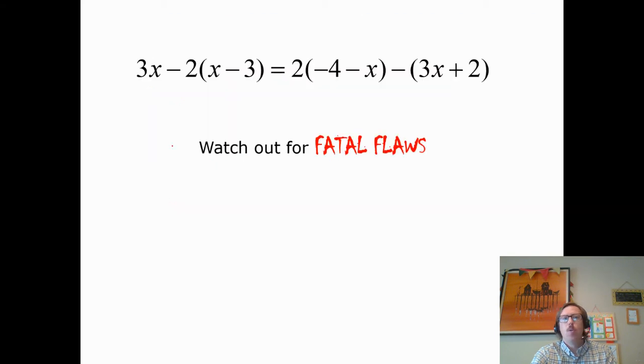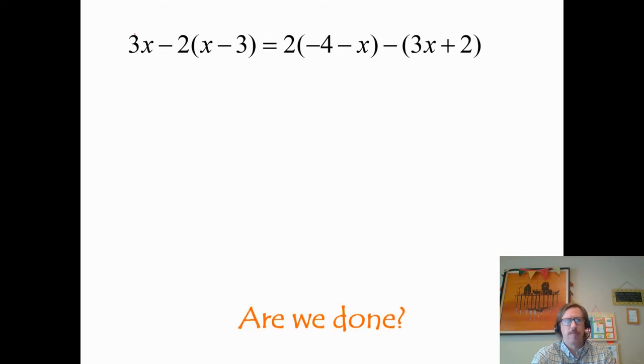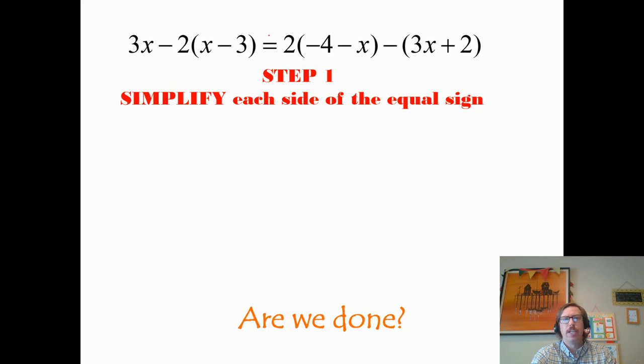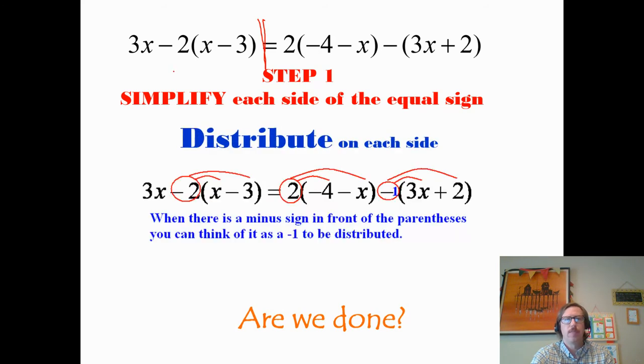Okay. So moving right on. Watch out for fatal flaws. This is a giant problem. And I'm going to cover the steps of it, but I'm not going to go into too much detail. So when we see a huge problem like this, we're going to start first by distributing. Simplify each side of the equal sign. So I'm not going to move anything. I'm not going to subtract a 2 on both sides. First, I want to simplify. I need to get this as simple as possible.